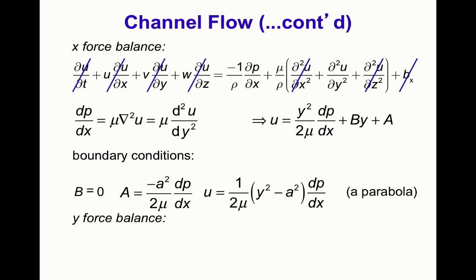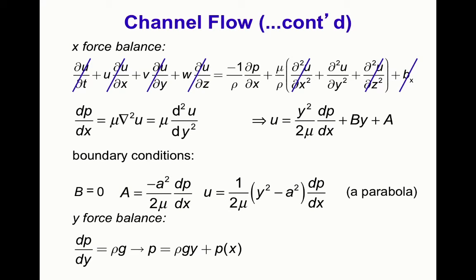From the y-direction force balance, we get dp/dy equals rho·g, so integrating gives p equals rho·g·y plus a constant that can vary as a function of x. This is the complete solution: the parabolic velocity u and the hydrostatic pressure p due to the weight of the fluid, where mu is the viscosity, y is the position across the channel, and dp/dx is the driving pressure gradient.